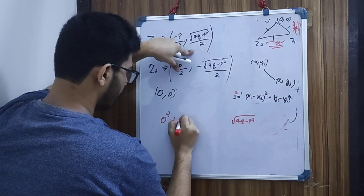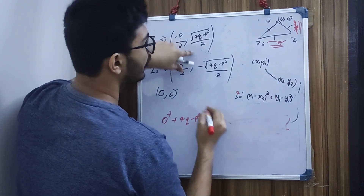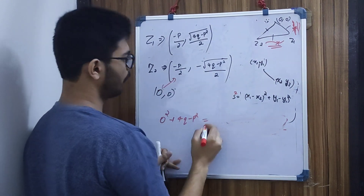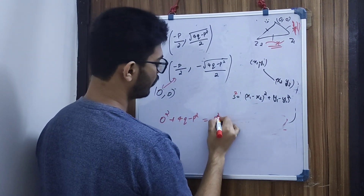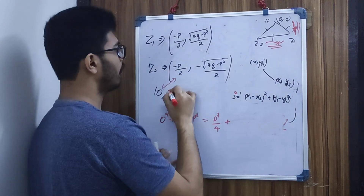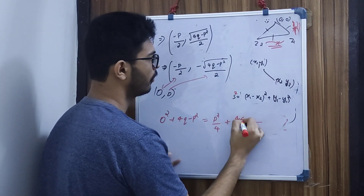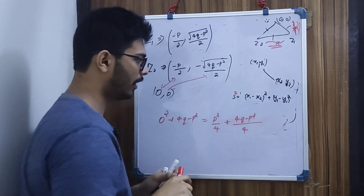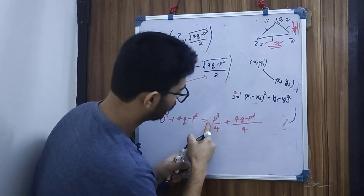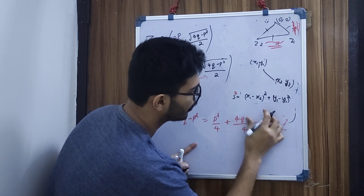The distance squared gives 4q − p². The x-coordinate difference squared is p²/4. The y-coordinate part has denominator squared equal to 4, giving (4q − p²)/4. Now I will simplify: 4q/4 minus p²/4.